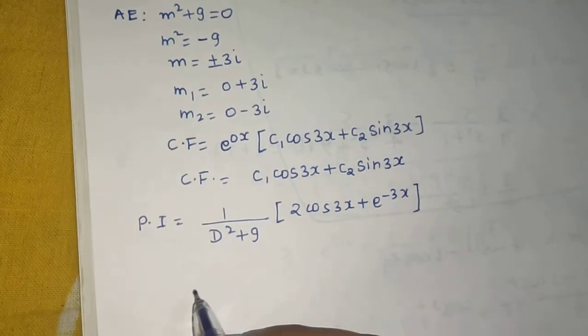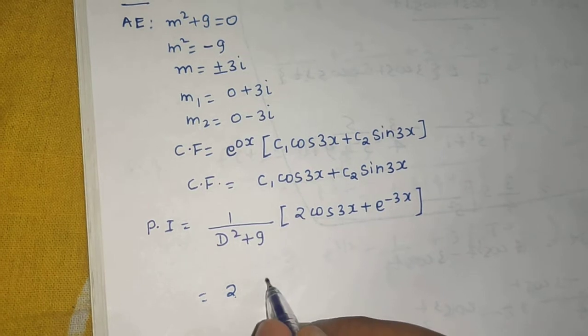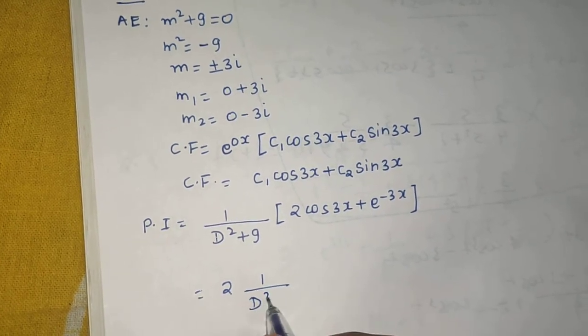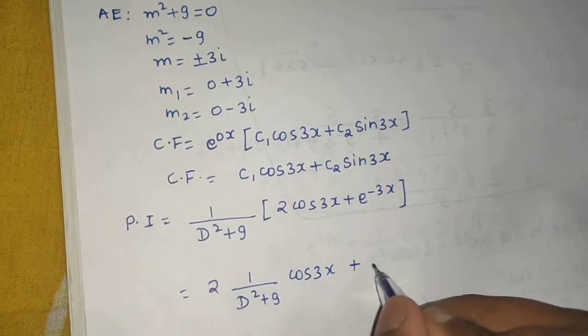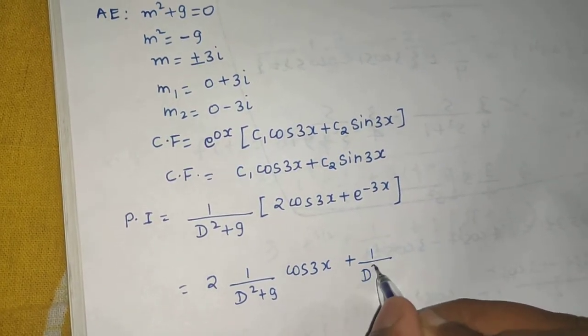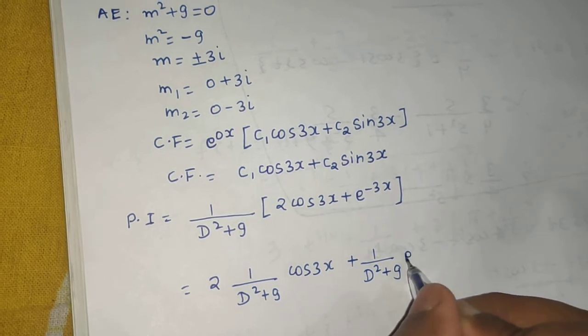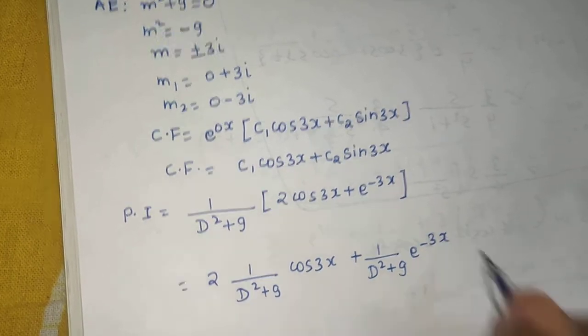Now we can separate this out and write this as 2 times 1 upon D squared plus 9 operating on cos 3x plus 1 upon D squared plus 9 operating on e power minus 3x.